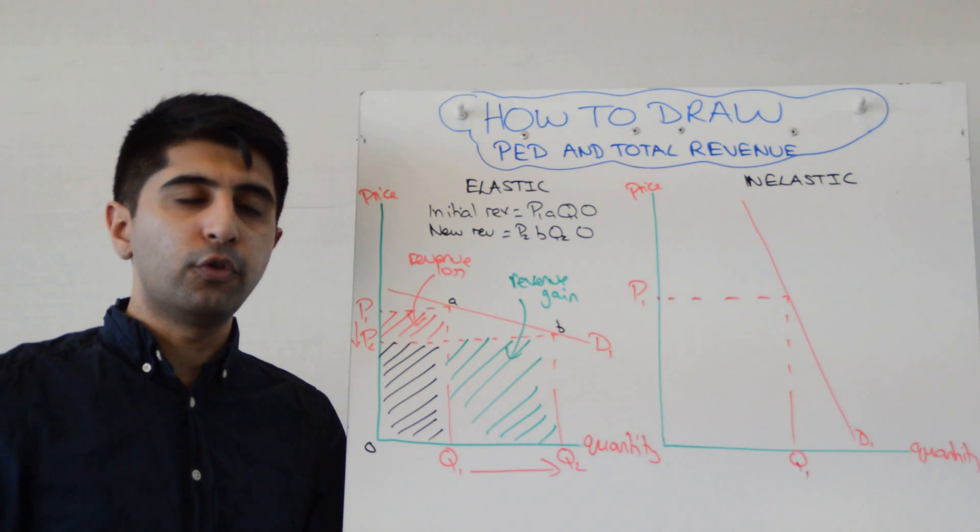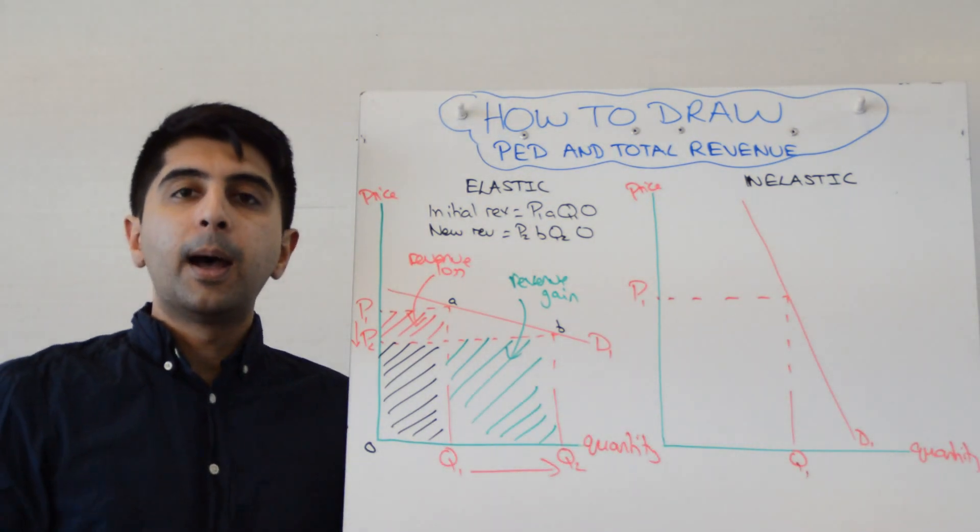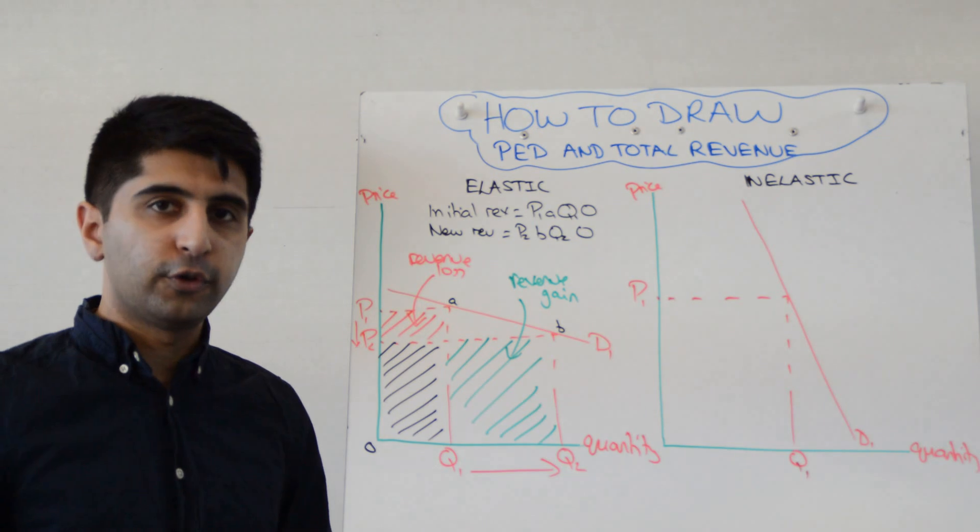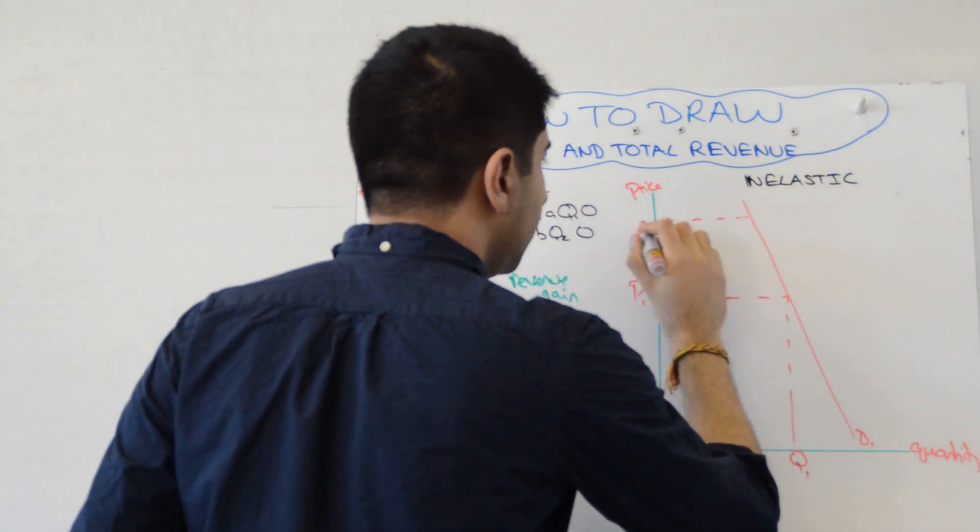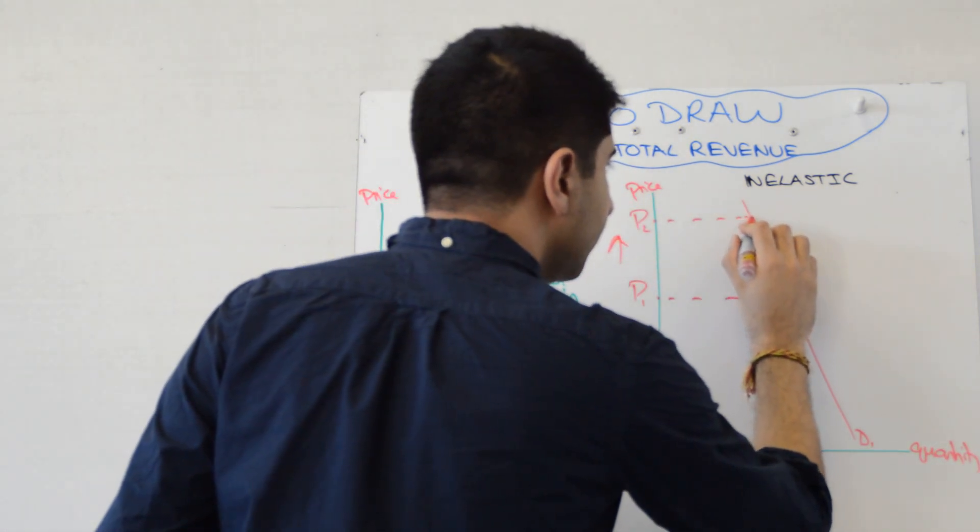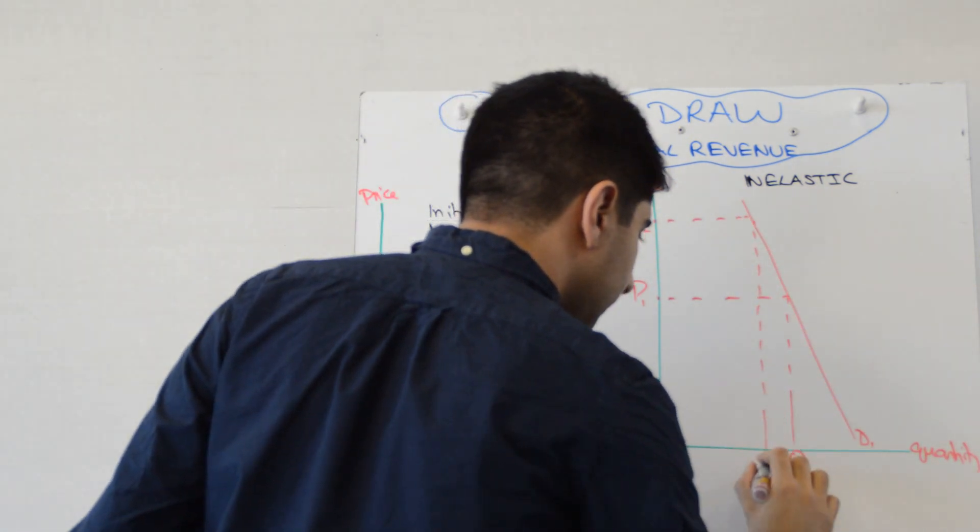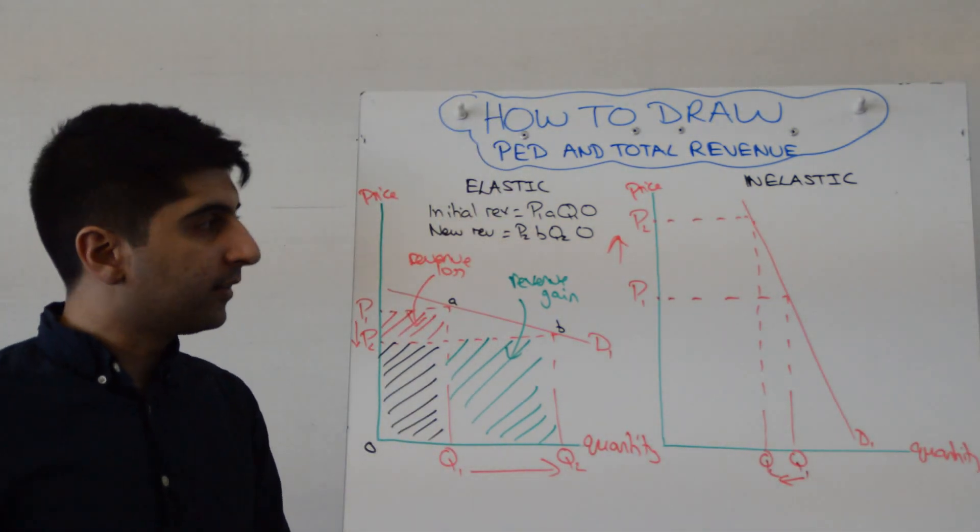Again, from my theory video before, you should realise that when demand for a product is price inelastic, a business should raise the price to increase total revenue. So let's show that. Let's take a price rise from P1 to P2, increase that price. And we'll see that demand does decrease, but proportionately less than the price increase.